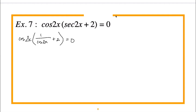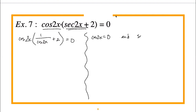A student points out that since it's already a product, we can split: cos(2x) = 0 and sec(2x) + 2 = 0 right away. That's exactly right — it's already factored for you. Let's do both methods to see that they're equivalent.